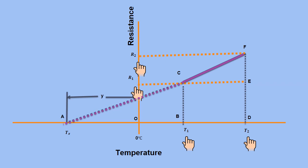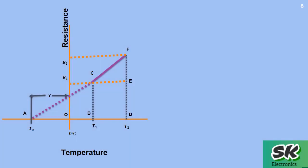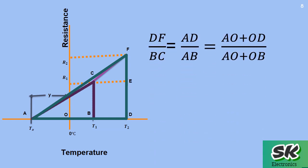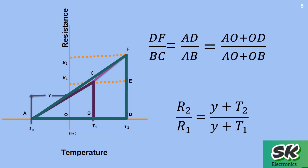Extending CF to the temperature axis gives point A. Y is the difference between zero degrees Celsius and the temperature at which the resistance would be zero if it continued to decrease linearly at very low temperatures. By extending CF to the temperature axis, triangles ABC and ADF are obtained. Since these triangles are similar, substituting the quantities that the sides represent gives: DF over BC equals AD over AB equals (AO + OD) over (AO + OB). We obtain R2 over R1 equals (Y + t2) over (Y + t1).